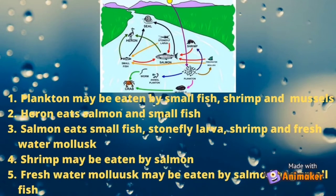Number two: heron eats salmon and small fish. Number three: salmon eats small fish, stonefly larva, shrimp, and freshwater mollusk. Number four: shrimp may be eaten by salmon. Number five: freshwater mollusk may be eaten by salmon and small fish.